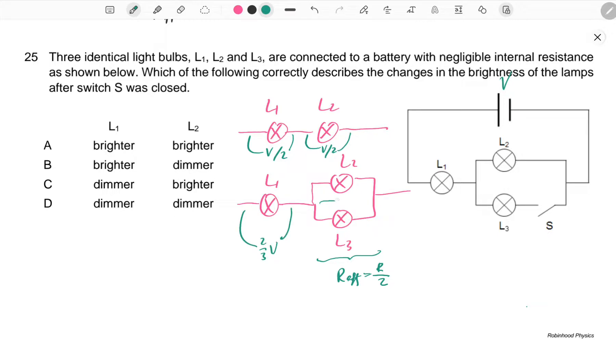Whereas across here will be V/3. Light bulb 1 will become brighter because power equals V²/R. L1 will become brighter, L2 will become dimmer, so the answer is B.